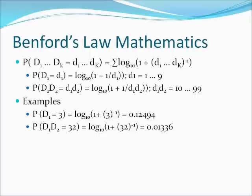d1 is from 1 through 9. The probability of any number d1, d2 from 10 through 99 being the first two digits is log base 10 of 1 plus 1 over d1d2. For example, 3 has 3 as the first digit. The probability of 3 being the first digit is log10(1 + 1/3), that is 0.12494, meaning there is a 12.494% chance that 3 appears as the first digit. The number 32 has 3 as the first digit and 2 as the second digit. The probability of 32 being the first two digits is log10(1 + 1/32), that is 0.01336, meaning there is a 1.336% chance that 32 appears as the first two digits in any number.